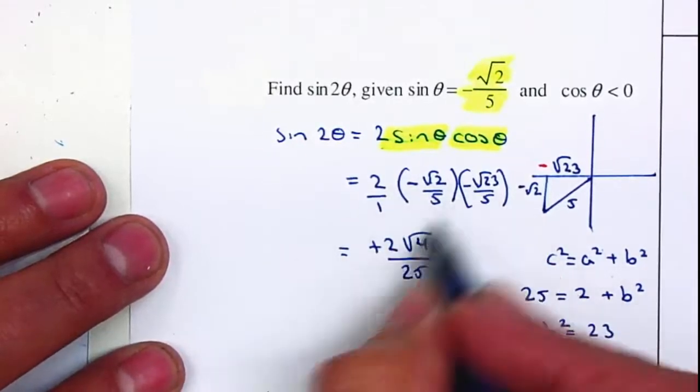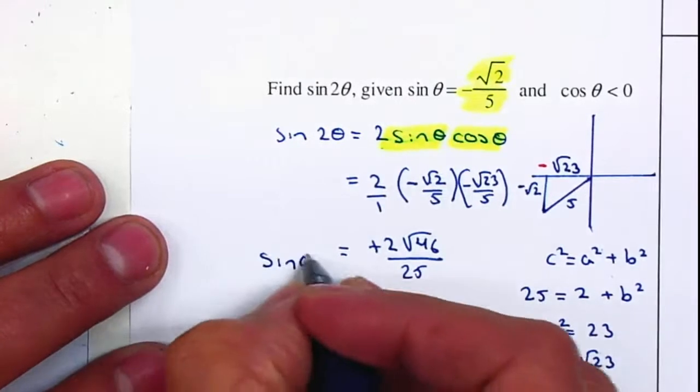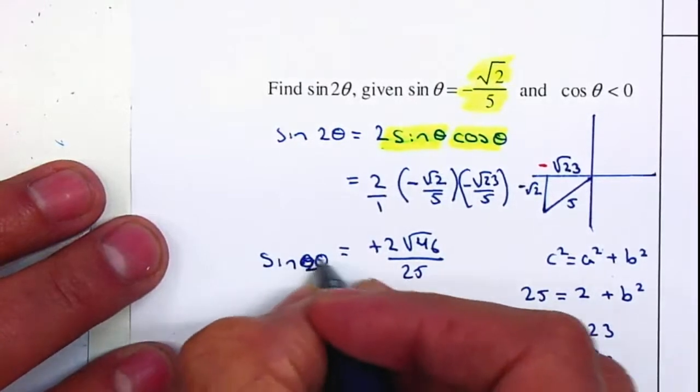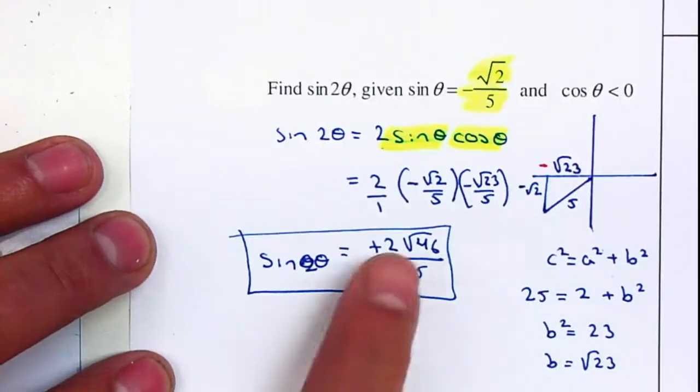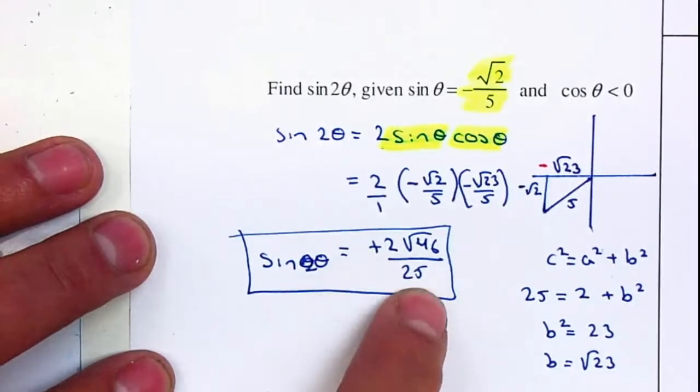Remember, negative times negative will be positive. So the sine of 2θ is 2 square root of 46 divided by 25.